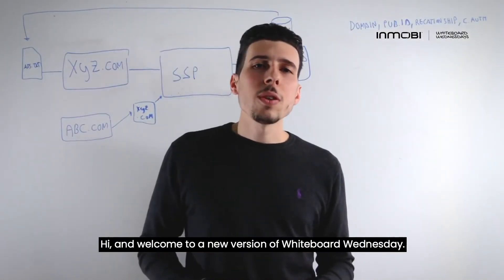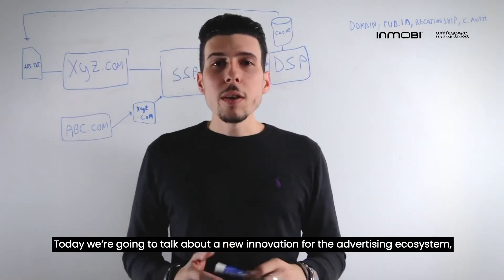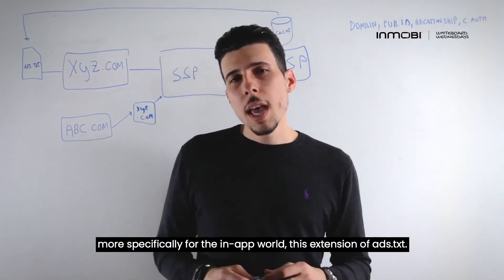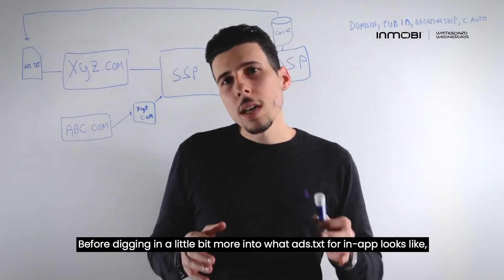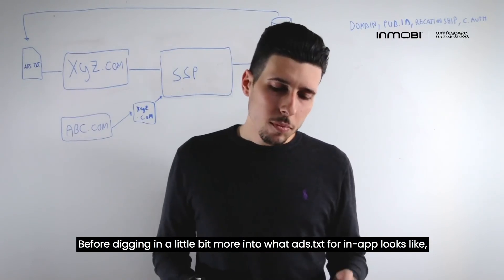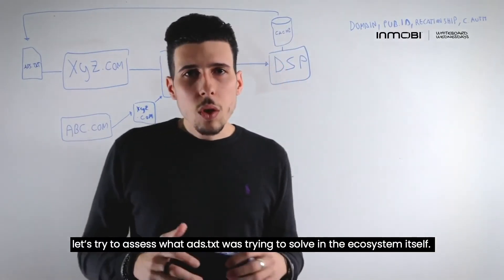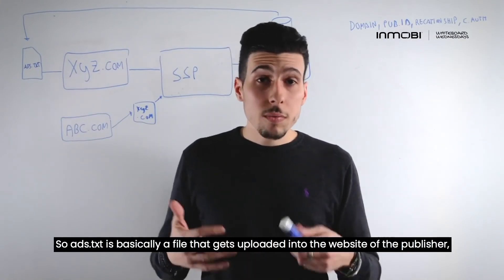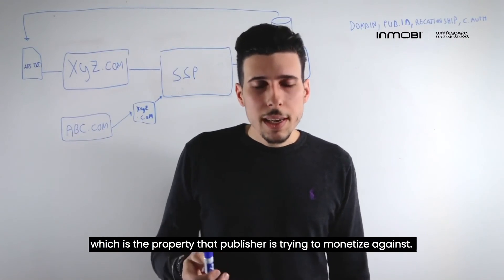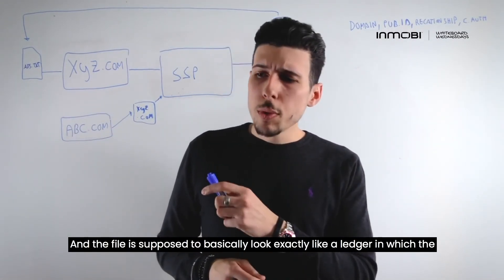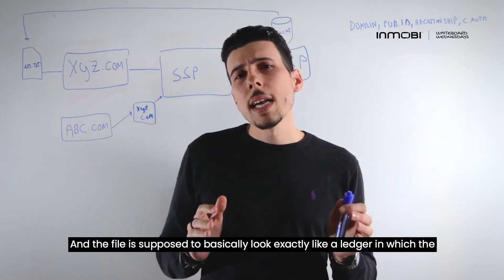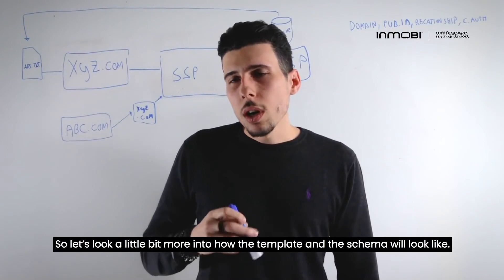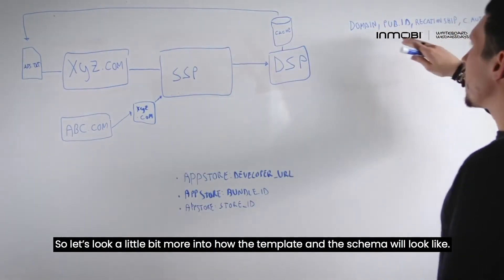Hi and welcome to a new edition of Whiteboard Wednesday. Today we are going to talk about a new innovation for the advertising ecosystem, and more specifically for the in-app world: the extension of ads.txt. Before digging into what ads.txt for in-app looks like, let's assess what ads.txt was trying to solve in the ecosystem. Ads.txt is basically a file uploaded to the website of the publisher — the property being monetized — and the file acts like a ledger in which the publisher can list the authorized sellers for that specific inventory.